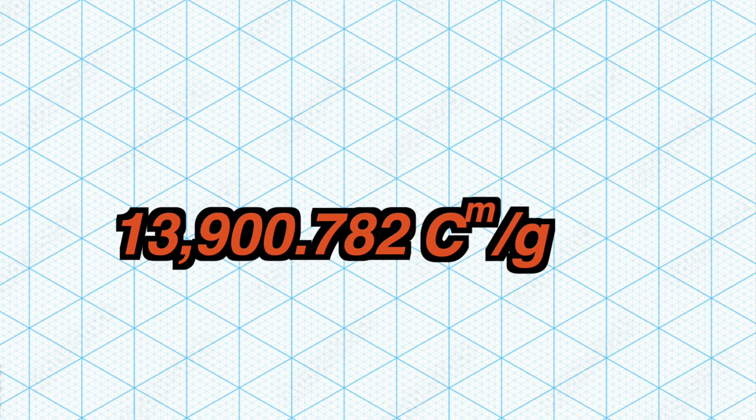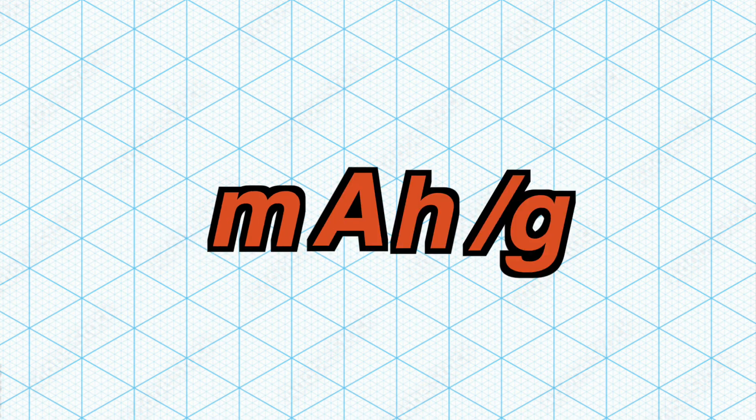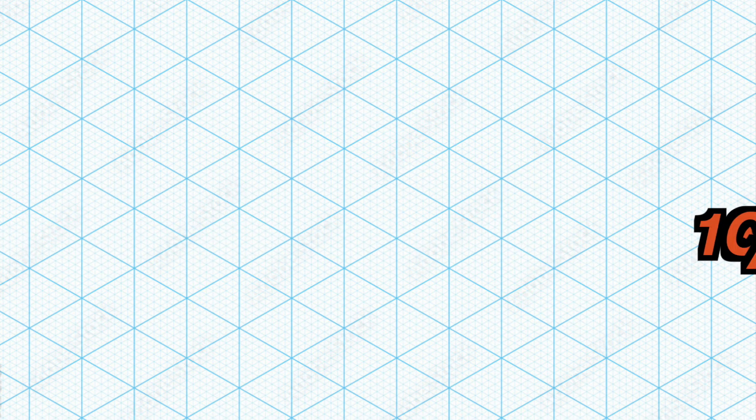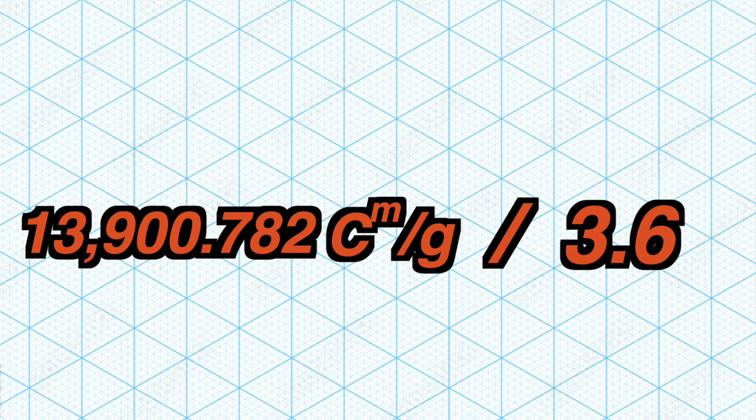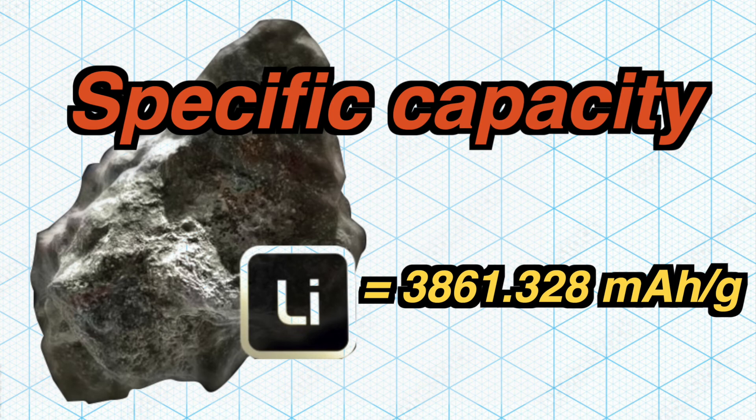But we don't want this in coulombs, we want this in milliamp hours per gram. So we just need to convert it to milliamp hours per gram by simply dividing by 3.6, which gives us a specific capacity of lithium of 3,861.3285 milliamp hours per gram.